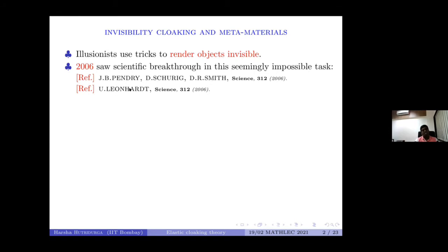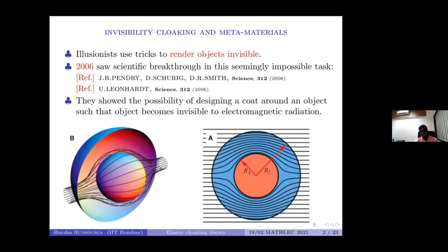This work of Pendry and co-authors and Leonard showed that it is indeed possible, theoretically at least, to build some structures around an object so that the object becomes invisible. Their idea is quite simple. Whether it can be done practically is beside the point. From a theoretical point of view, say you have a football and you want to hide it — what you do is coat that football with some material so that electromagnetic waves don't penetrate it or go around it, and an observer standing here doesn't see the football.